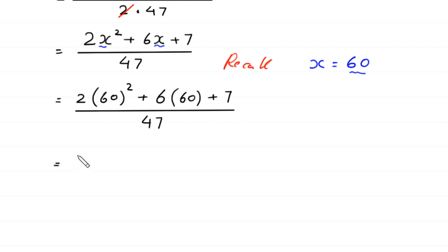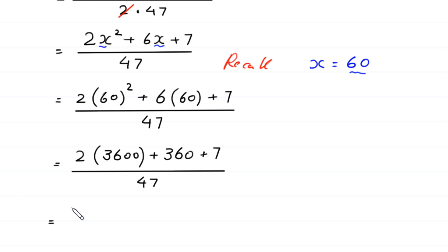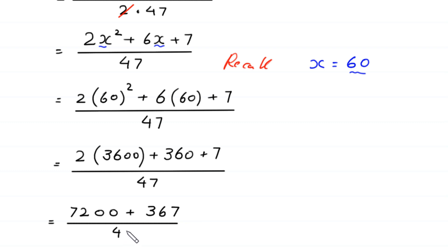Next, 60 squared equals 3600, and 6 times 60 equals 360. So the numerator becomes 2 times 3600 plus 360 plus 7. That gives 7200 plus 360 plus 7, which equals 7567, divided by 47.